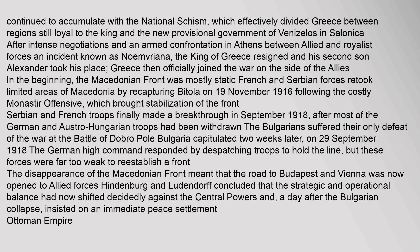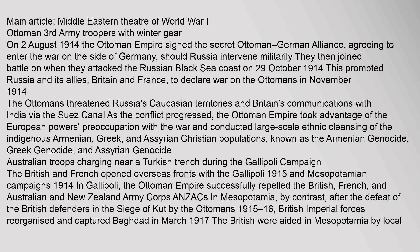On 2 August 1914, the Ottoman Empire signed the secret Ottoman-German alliance, agreeing to enter the war on the side of Germany should Russia intervene militarily. They joined battle when they attacked the Russian Black Sea coast on 29 October 1914, prompting Russia, Britain, and France to declare war on the Ottomans. In November 1914, the Ottomans threatened Russia's Caucasian territories and Britain's communications with India via the Suez Canal. As the conflict progressed, the Ottoman Empire conducted large-scale ethnic cleansing of the indigenous Armenian, Greek, and Assyrian Christian populations, known as the Armenian Genocide, Greek Genocide, and Assyrian Genocide.